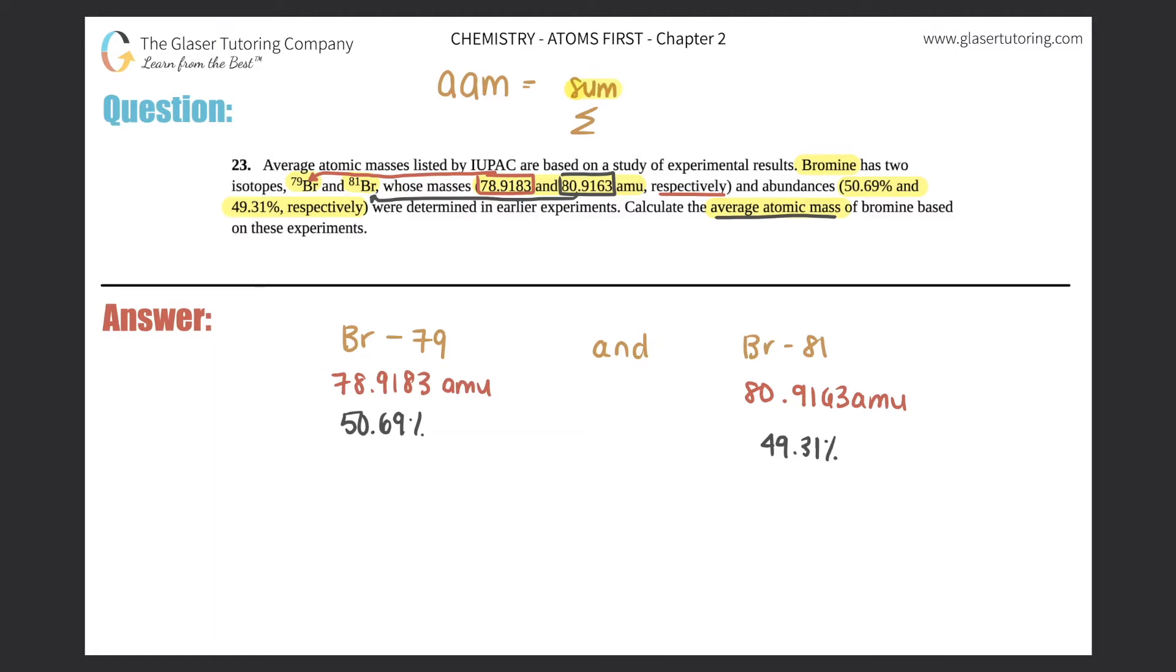So we're just going to add up all of your isotope masses times by their abundances. That's all that it is. So you just have to multiply their masses with their abundances, and then just add them up. It's just the sum.